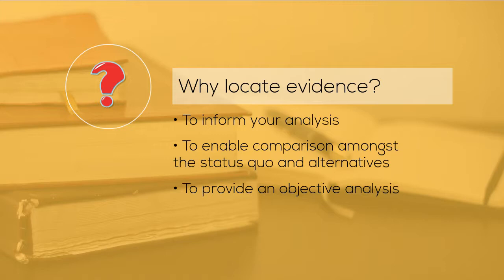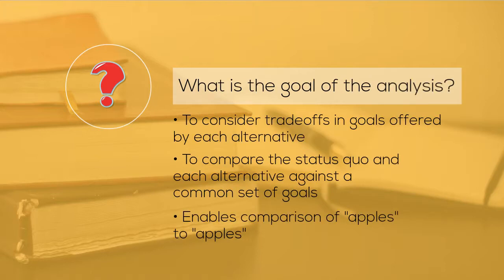As you will learn in the readings, sometimes scientific evidence is lacking, and therefore you are forced to rely on qualitative or less precise forms of evidence. This is particularly the case when new problems emerge and policy and other interventions have not been implemented or tested. There is no perfect evidence, nor is there a perfect way to design or select a chosen course of action. Now that you have identified your goals and alternatives, it is time to gather the evidence to assess the status quo and the alternatives relative to your goals.